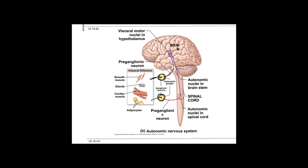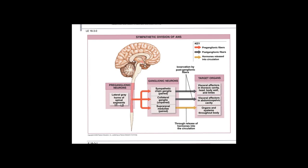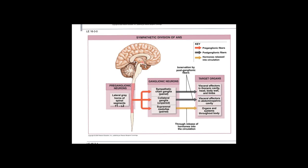Now we'll look at the sympathetic division specifically — where the ganglia are, the neurotransmitters, and other specifics. The sympathetic NS is thoracolumbar, so the preganglionic neuron exits through T1 to L2. There are three places where preganglionic neurons can synapse: the sympathetic chain ganglia, the collateral ganglia, or they can go directly to the adrenal medulla.